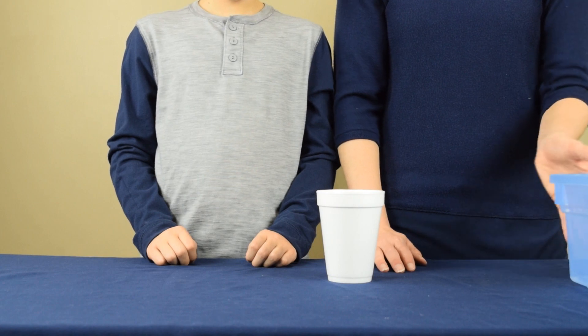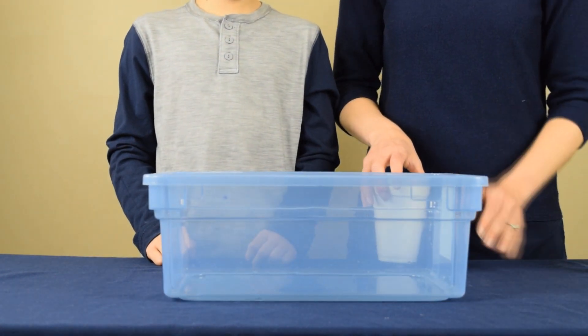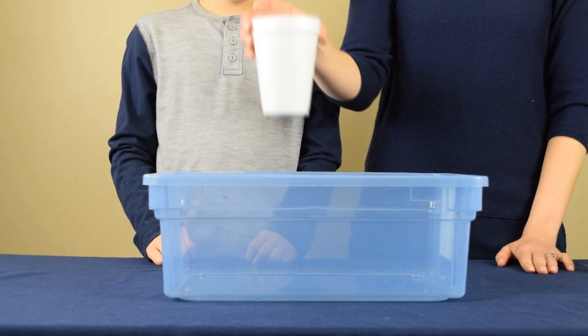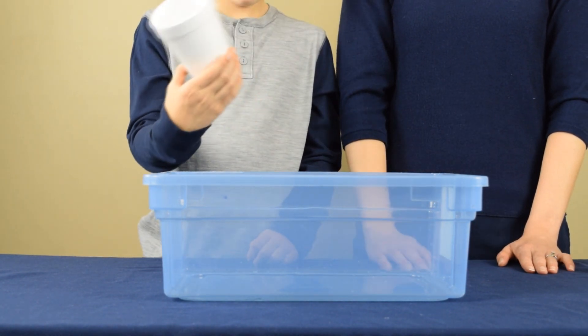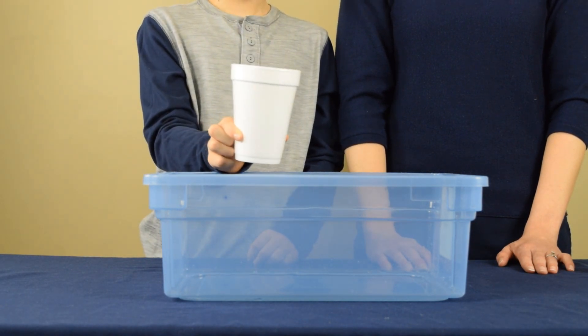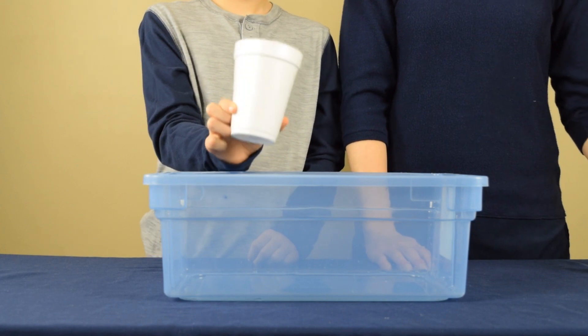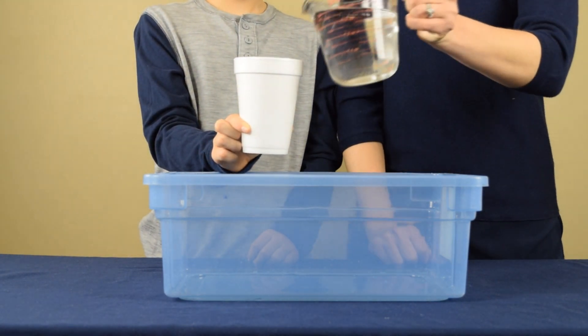For this step, we are going to place a container underneath, just in case we make a little mess. My son's going to hold the cup and position it so his fingers are covering the holes that he just made. After he's done that, I'm going to take some water and fill the cup with water.